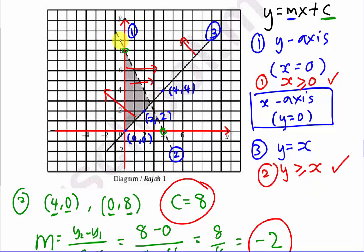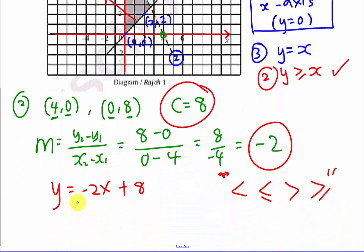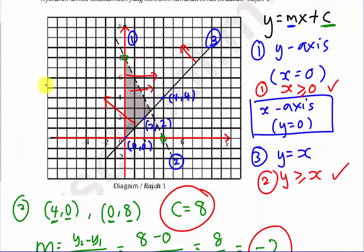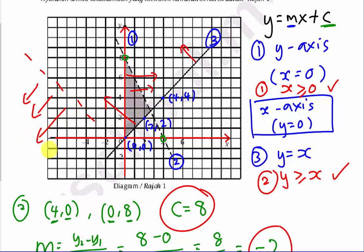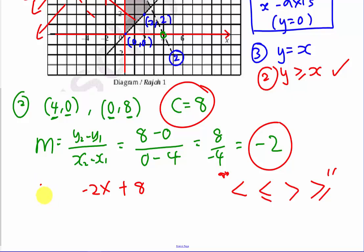The last inequality is for the dashed line — the equation y equals negative 2x plus 8. The shaded region is below this line. If you imagine the line extending downward in that direction, the y value is decreasing. So y is less than negative 2x plus 8. Because it is a dashed line, there is no equal sign, giving us y less than negative 2x plus 8.